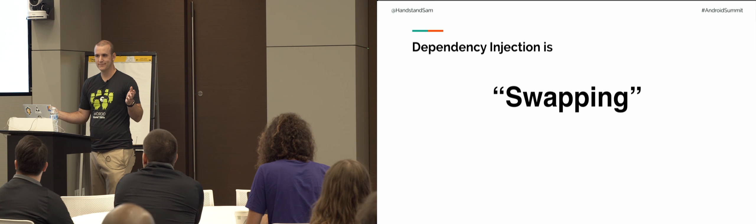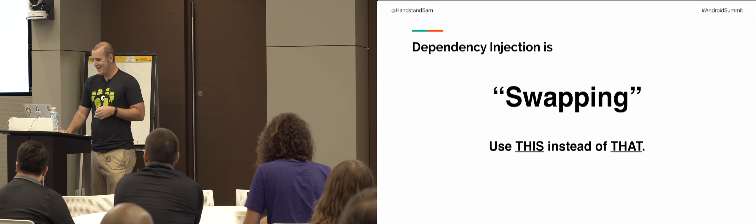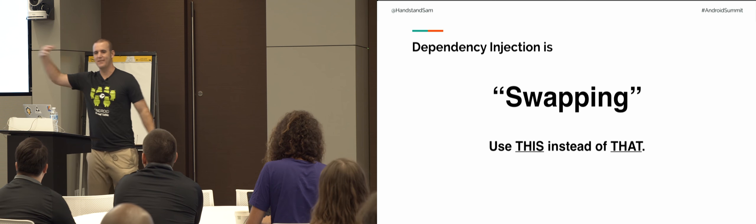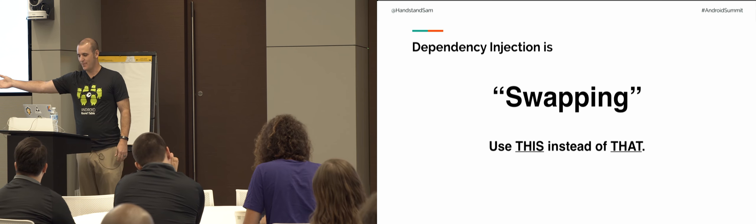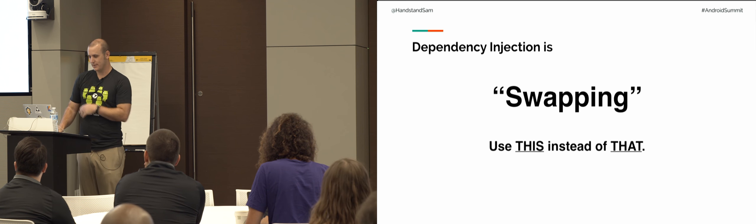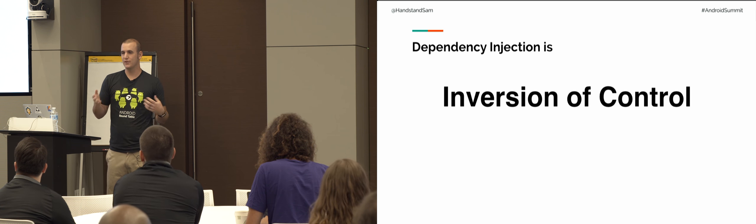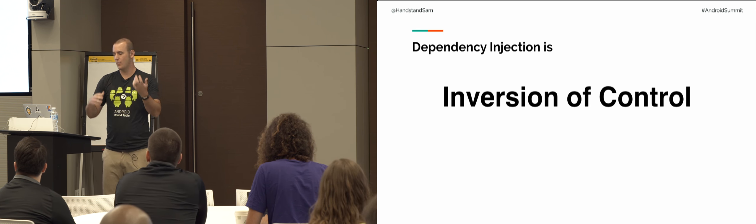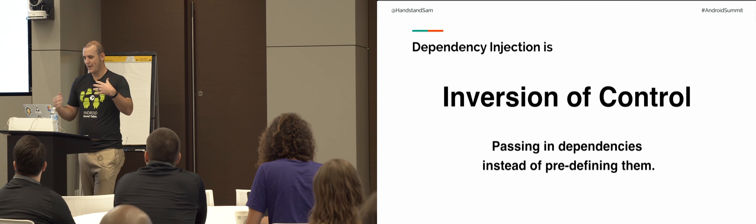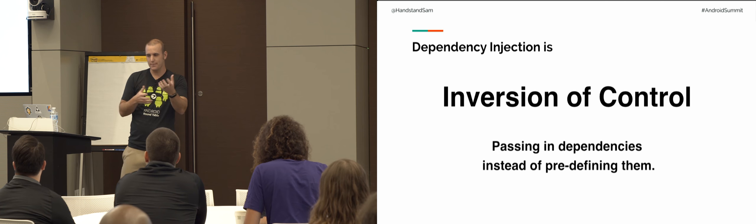Dependency injection is swapping — use this instead of that. It is the ability to swap. And if you want to be more fancy, dependency injection is an inversion of control. Basically the ability to swap out things. You're passing in your dependencies instead of having your code predefined them. You're able to swap.